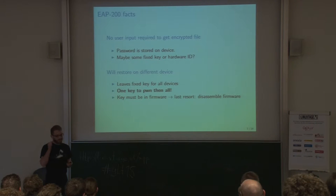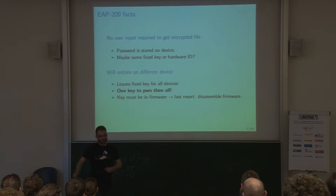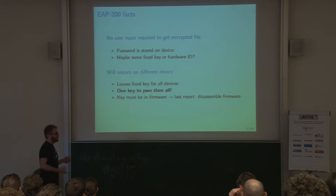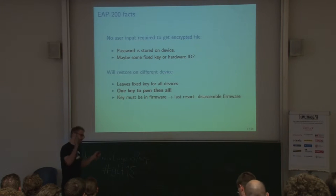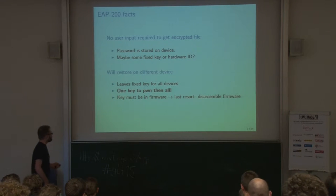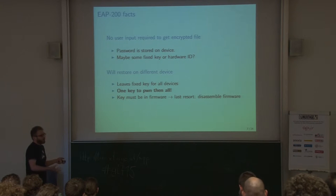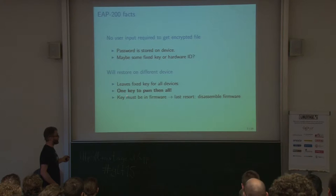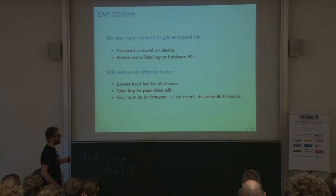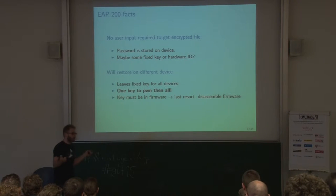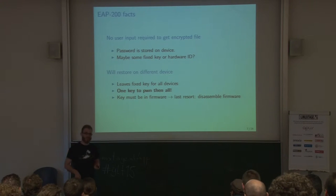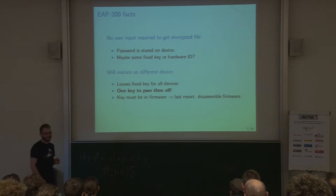We tried both and found out it has to be a fixed key, because you can take the configuration file from one device and restore it on three different other ones. That means if we disassemble the firmware, we have to find the key somewhere in there. But also, with one key we can use the security hole to get the encrypted file and break all of them worldwide — so whenever I'm at a hotel, I check the wireless access point.